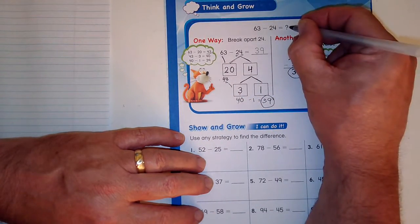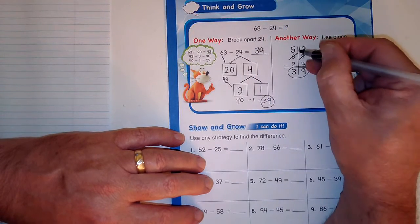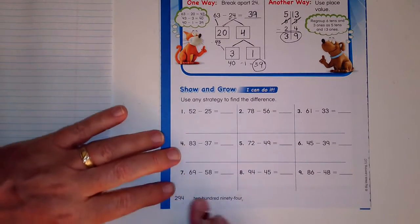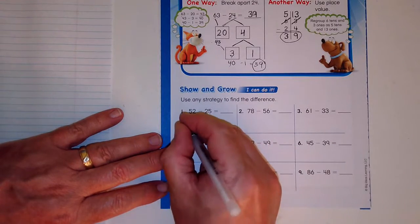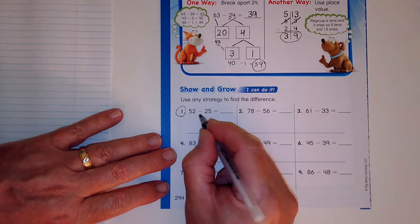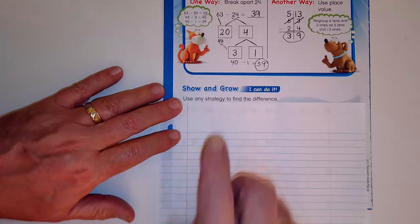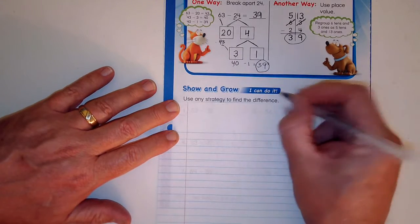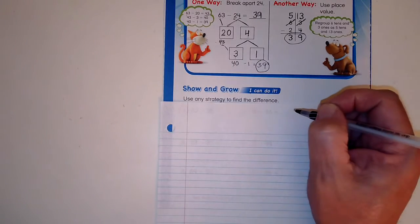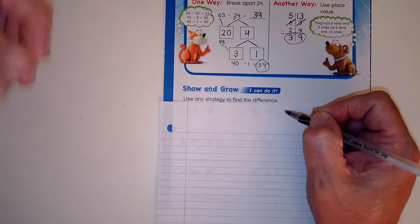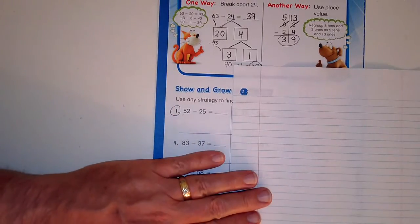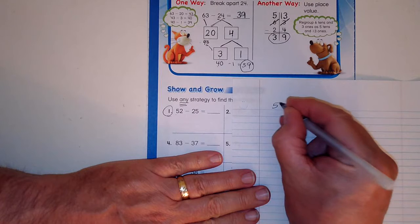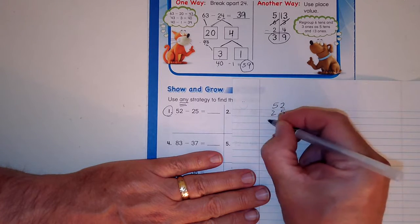But we did it a different way. 63 minus 24 is 39 both ways. Now here's the important part. Are you ready? On page 294, number one is the one that I want to do: 52 minus 25. Use any strategy to find the difference. And if you were in my class we would be shouting 'I can do it.' So 52 minus 25, and I can use any strategy. Well, any strategy means any strategy.